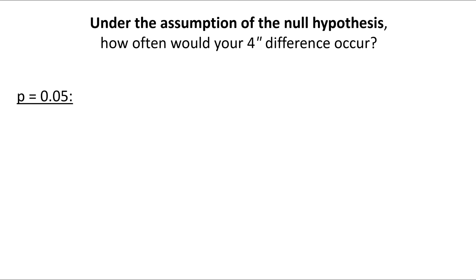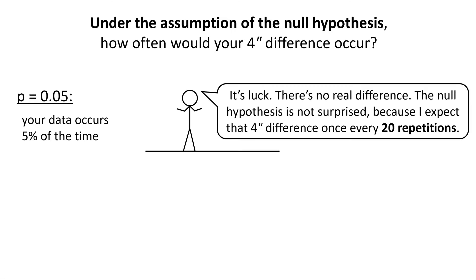If p is 0.05, then that means your 4 inch height difference would only occur 5% of the time under the null hypothesis. In other words, the null hypothesis is saying, it's luck, there's no real difference. I'm not surprised because I expect that 4 inch difference to occur once every 20 repetitions of the experiment. That's not very convincing, is it?